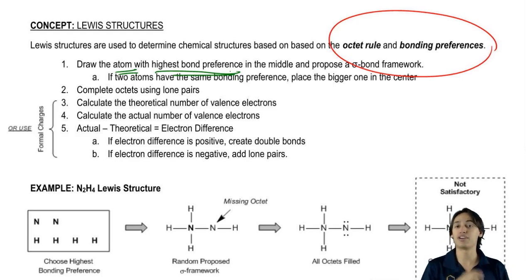So for example, if I were to compare nitrogen versus oxygen, which one would win? Nitrogen, because nitrogen likes to have three bonds and oxygen likes to have two. Does that make sense?